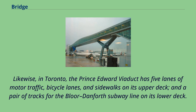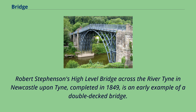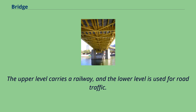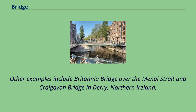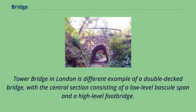In Toronto, the Prince Edward Viaduct has five lanes of motor traffic, bicycle lanes, and sidewalks on its upper deck, and a pair of tracks for the Bloor-Danforth subway line on its lower deck. The western span of the San Francisco-Oakland Bay Bridge also has two levels. Robert Stevenson's high-level bridge across the River Tyne in Newcastle-upon-Tyne, completed in 1849, is an early example of a double-decked bridge, with the upper level carrying a railway and the lower level used for road traffic. Other examples include Britannia Bridge over the Menai Strait and Craigavon Bridge in Derry, Northern Ireland. The Øresund Bridge between Copenhagen and Malmö consists of a four-lane highway on the upper level and a pair of railway tracks at the lower level. Tower Bridge in London is a different example of a double-decked bridge, with the central section consisting of a low-level bascule span and a high-level footbridge.